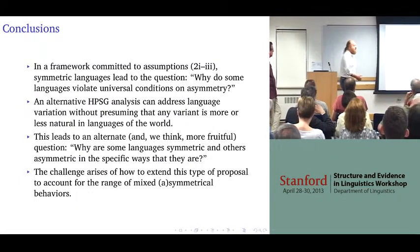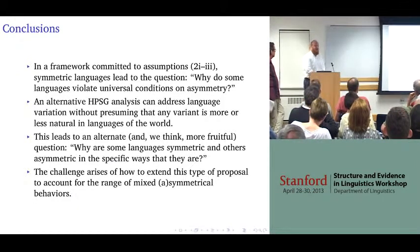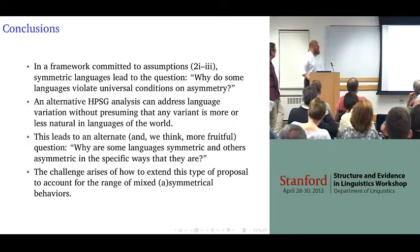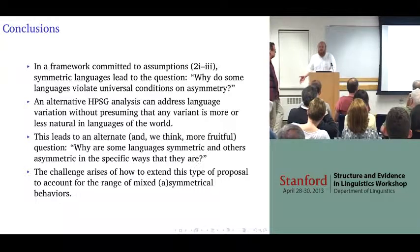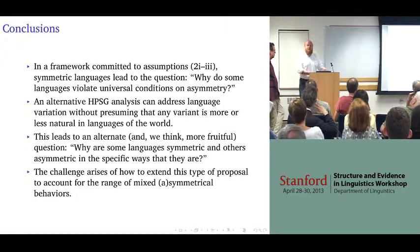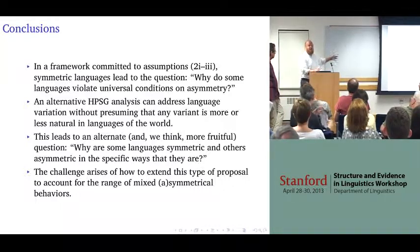This alternative HPSG analysis, which lets us fairly directly state what the intuition is in a formal way that then leads to consequences that are either right or wrong, lets us ask the question — which we think is probably more fruitful — well, why is it that some languages are symmetric and why is it that some languages are asymmetric in exactly the way that those languages happen to be? Not all symmetric languages are the same, and there are even more constructions in Moro that we could look at.